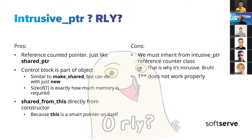The cons are that we must inherit from an intrusive pointer reference counter class — that is why it is called intrusive — and double pointer (double asterisk) doesn't really work properly with it.